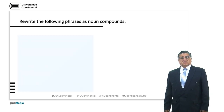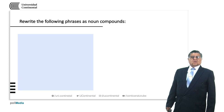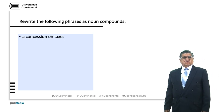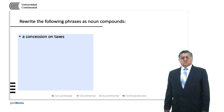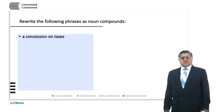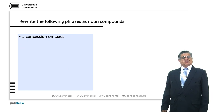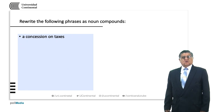We are going to start by making noun compounds from phrases. We have the phrase 'a concession on taxes', which describes a situation in which the amount to be paid is lowered — your payment for taxes is going to be less than previously stated. To make a compound noun, we shorten it to this form: 'tax concession'.